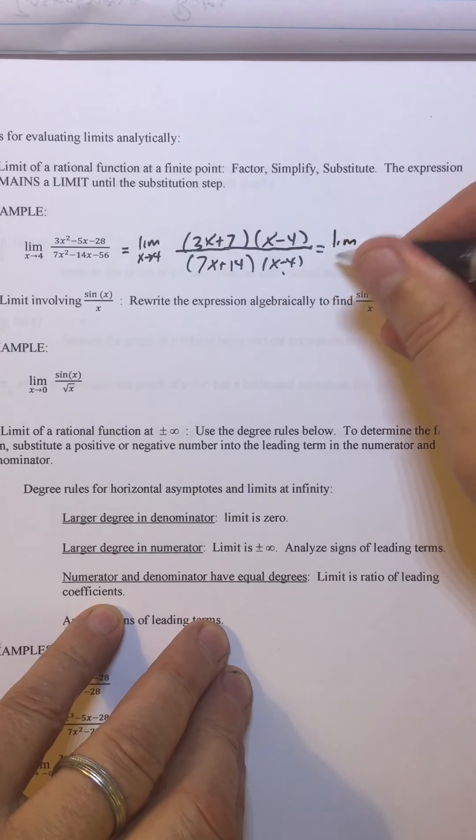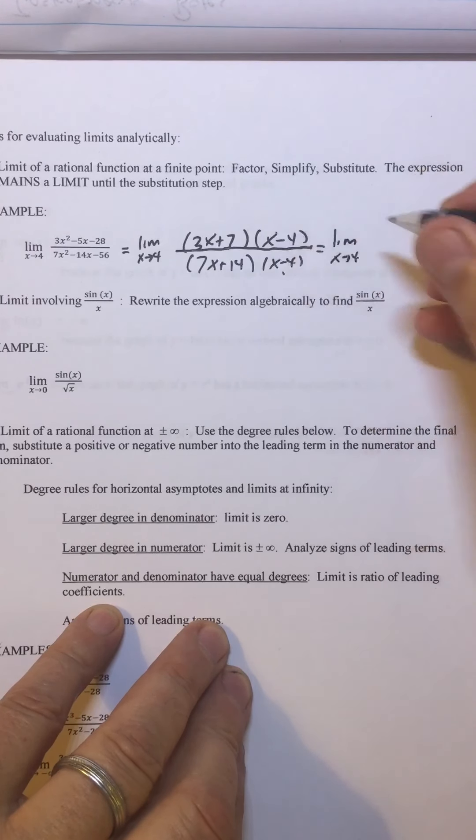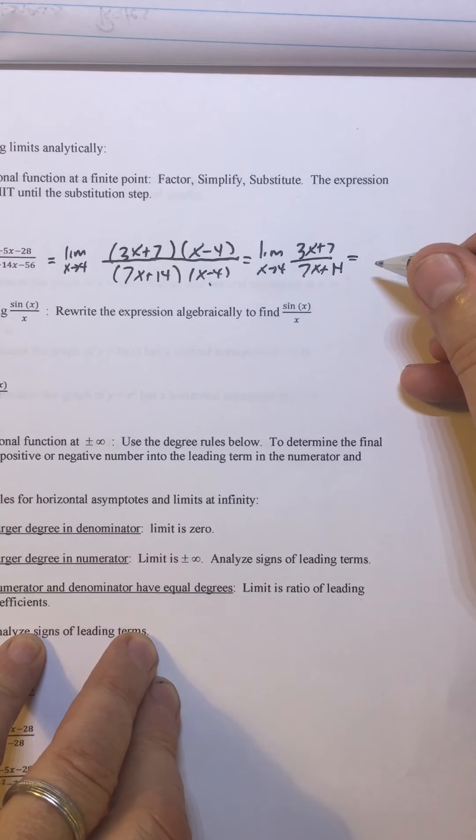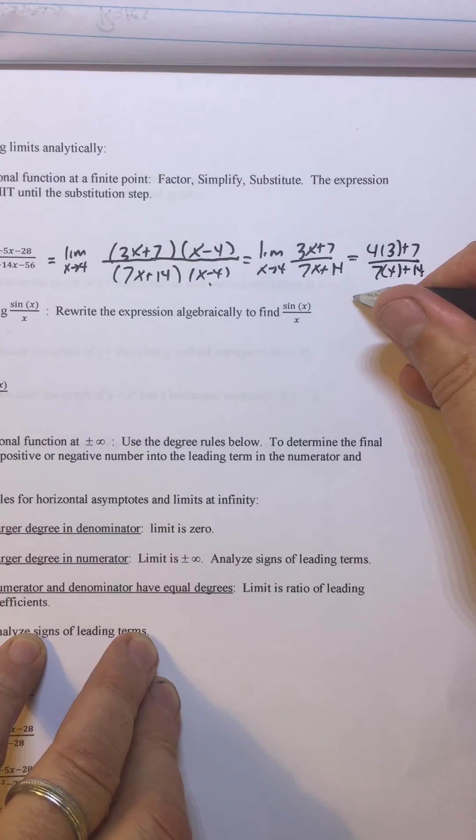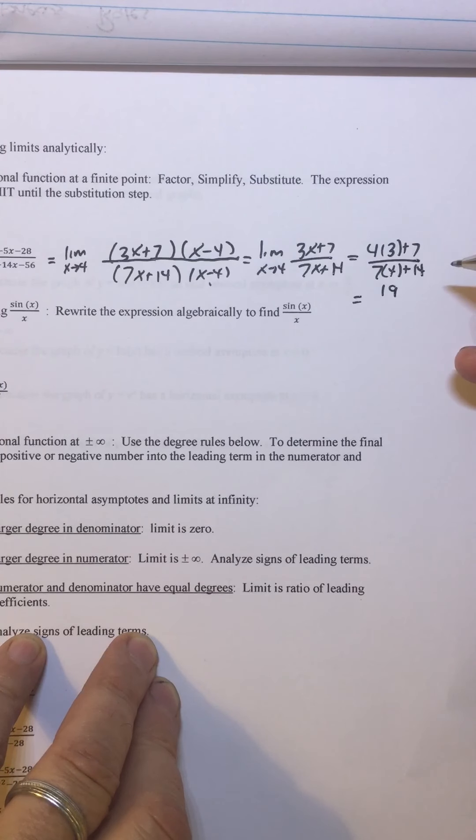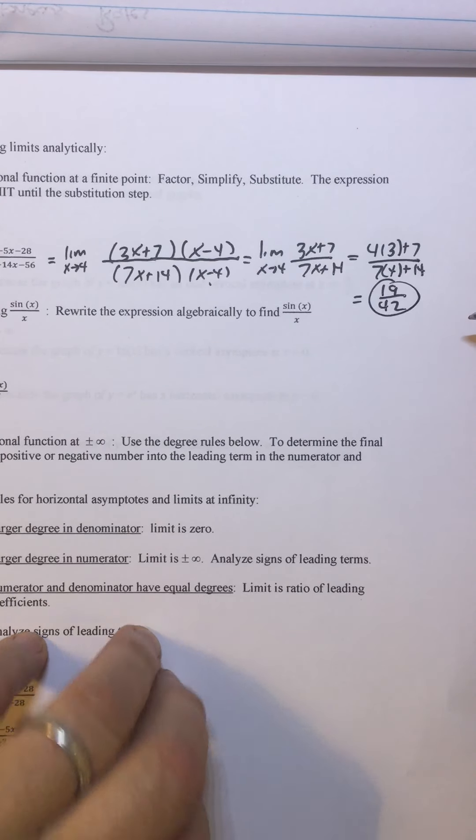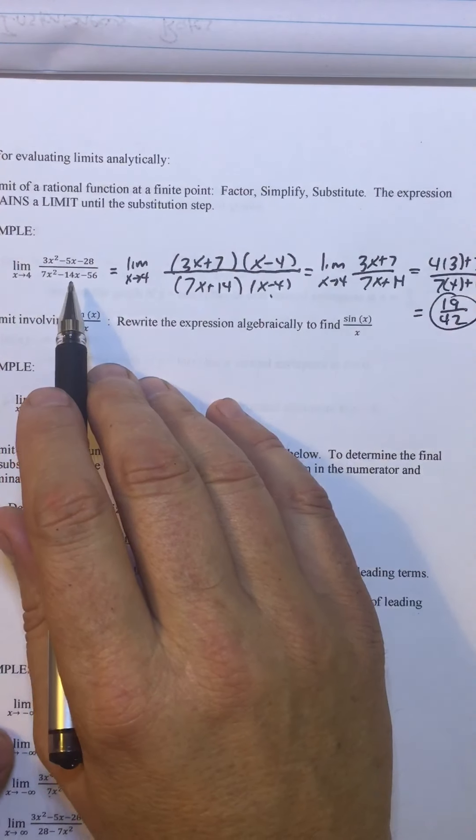So this equals limit as x approaches 4. By the way, that was the factor step. Now, the simplify step, still a limit, 3x plus 7 over 7x plus 14. Then I substitute. When I substitute, it is no longer a limit. So I'm going to plug in the 4. I'm going to write 4 times 3 plus 7 over 7 times 4 plus 14. So we can see that I'm evaluating, and then I'm going to figure out what that is. 12 plus 7 is 19. 28 plus 14 is 42. I don't know why I chose an insane example.